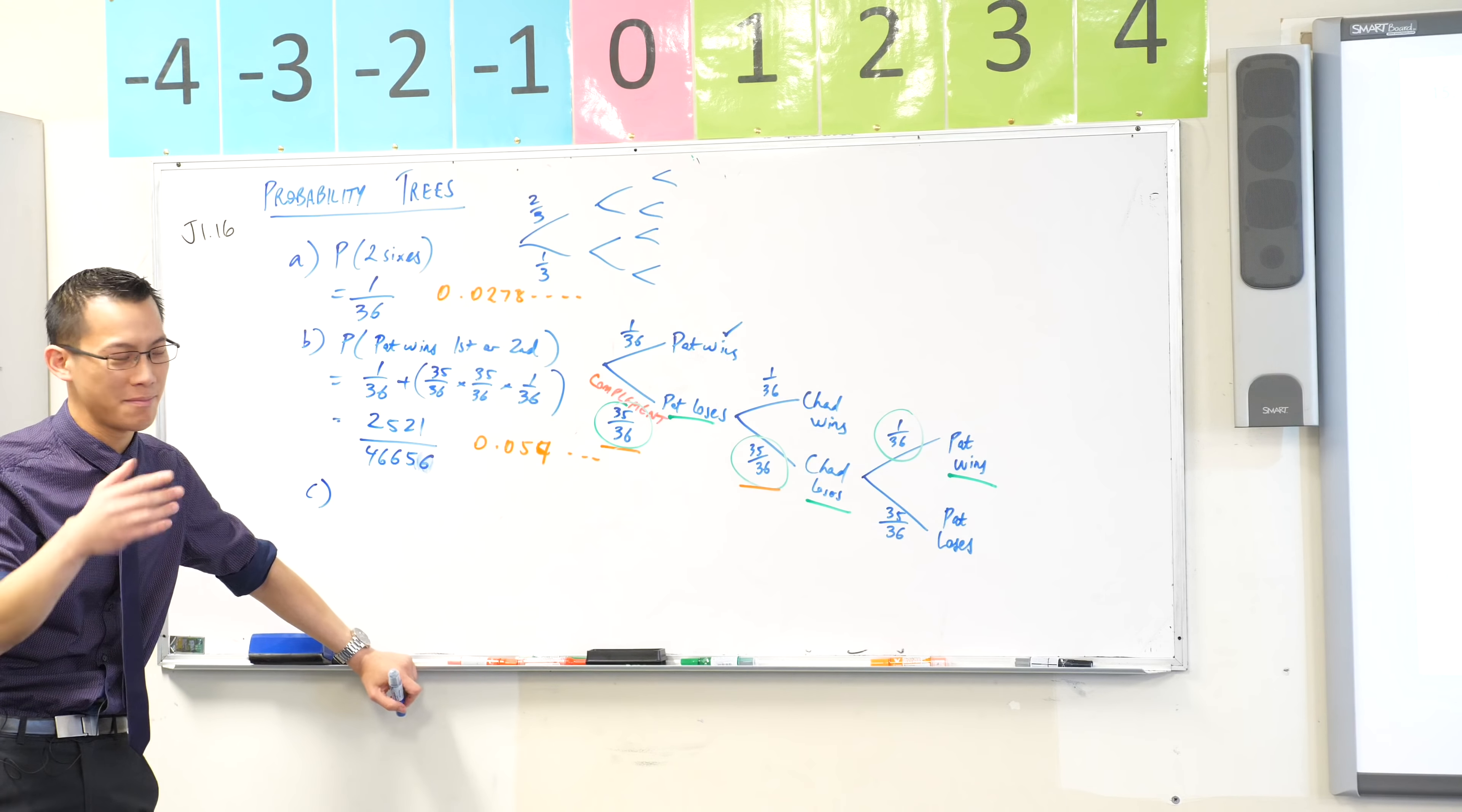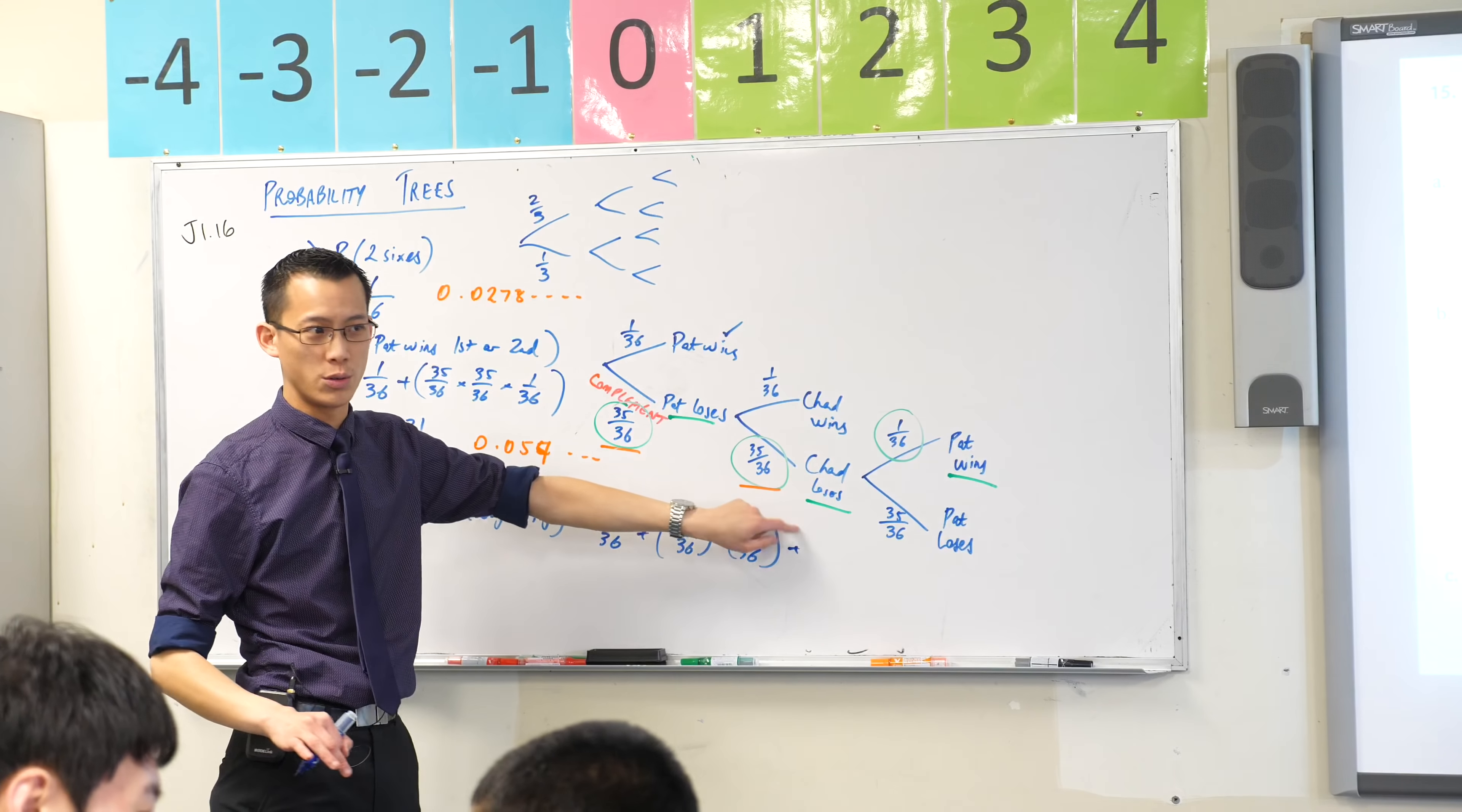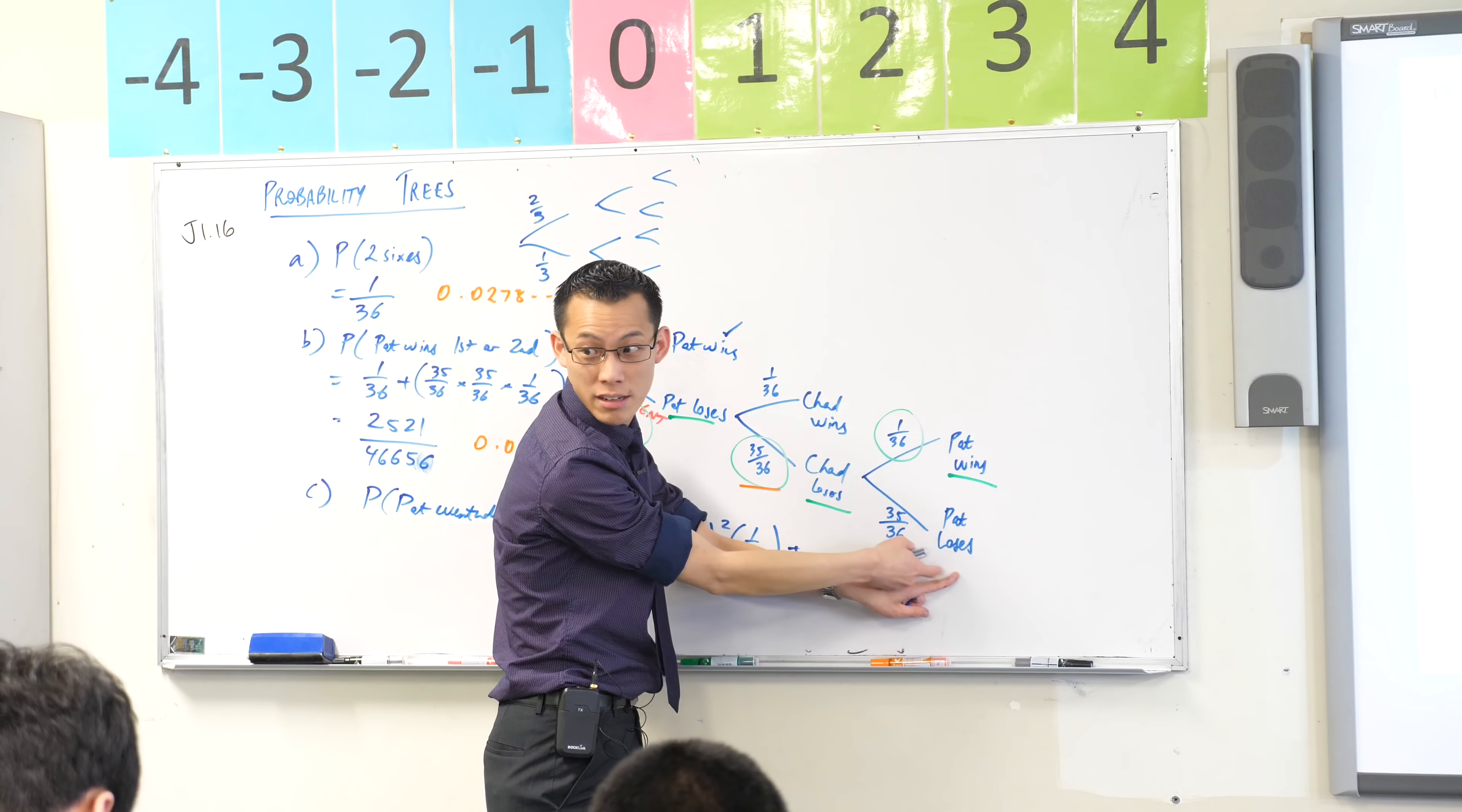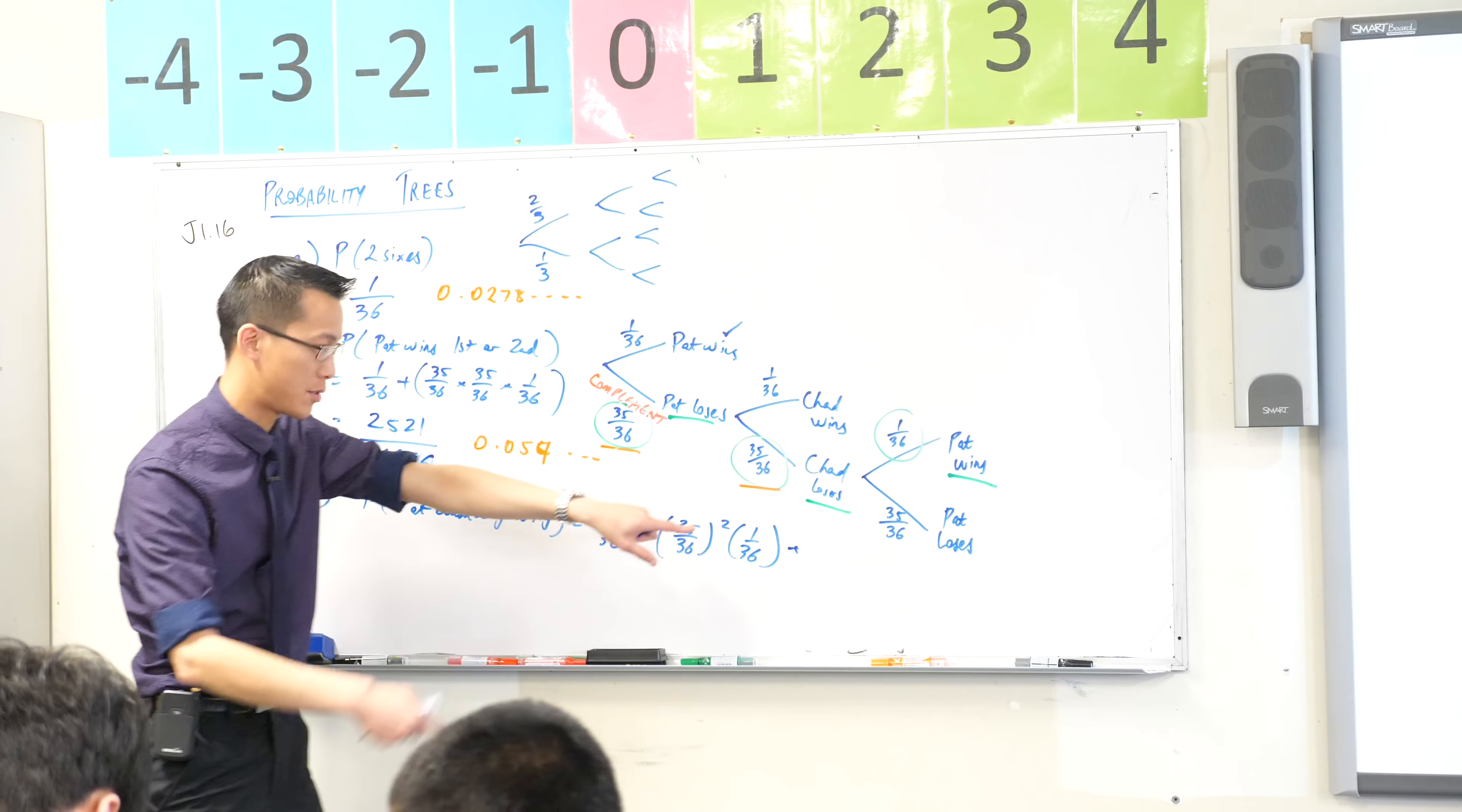Now, what would happen? I don't really want to keep on drawing the rest of the probability tree. I think I can work it out because of the pattern I've established. What will have to happen for him to win not on his first or second but on his third roll? What will have to happen after, for example, Chad losing? If I want him to win on not his second but his third roll, what happens here? Pat will have to lose again. Then Chad will have to lose again. And then finally Pat wins. That's his third attempt, right?